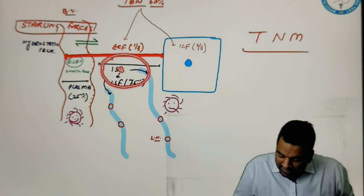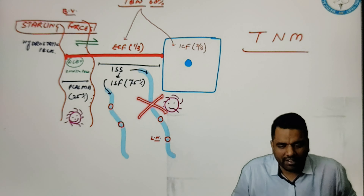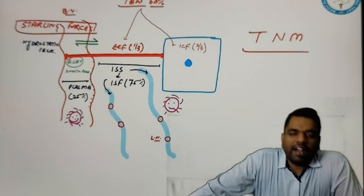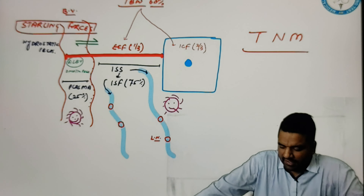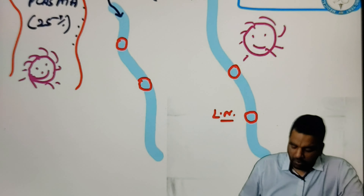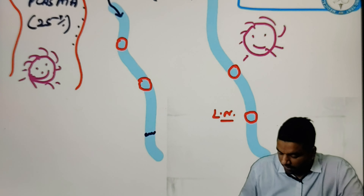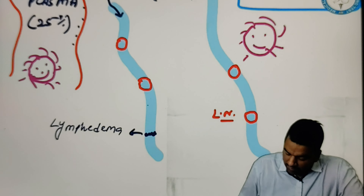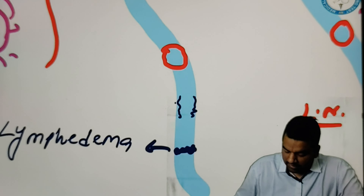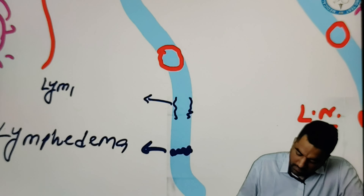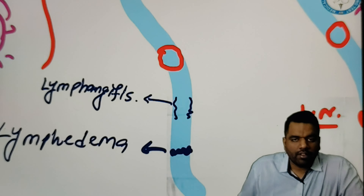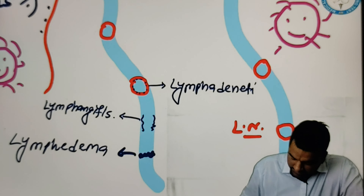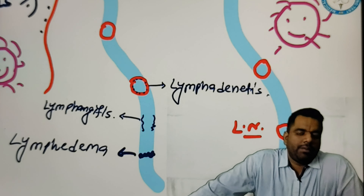Now guys, these lymphatic vessels are very favorite food for a virus called filariasis. Whenever filariasis enters, it doesn't like your blood vessel or your cell — it likes your lymphatic pipeline or the lymphatic vessel. What will happen if this lymphatic pipeline is damaged or gets blocked? This extra fluid which is producing over here cannot get out from this area because there is a blockage. This can lead to the accumulation of fluid called as lymphedema. So that's why in filariasis you always see lymphedema, and this lymphedema can lead to a very big condition called as elephantiasis.